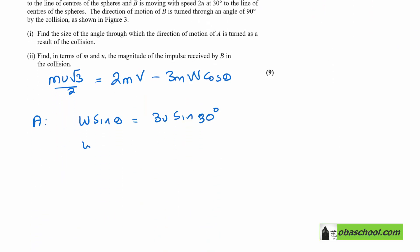And so w sin theta is equal to 3U sin 30 is a half.